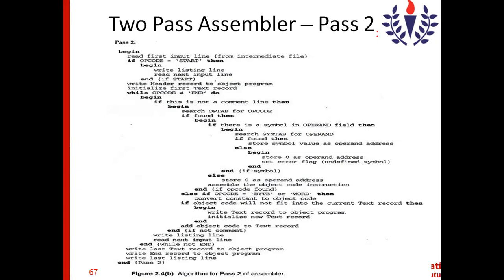If the assembler is not able to find the operand in the symbol table, it stores 0 as the operand address and sets an error flag saying 'undefined symbol.' If a symbol is not present in the symbol table, we assign 0 and flag it as undefined — similar to using an undeclared variable in a C program, which gives a 'not declared' error at compile time.